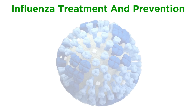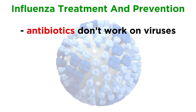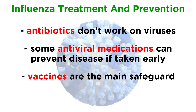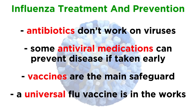Now let's talk about treatment and prevention. Since influenza is a virus, antibiotics don't work to treat infection. Some antiviral medications can prevent disease if taken early, but the main form of prevention is by vaccine. Since these viruses are prone to continual evolution, it is very difficult to create a vaccine that offers lifelong immunity. Because of antigenic drift, a slightly new strain of influenza is always emerging, and it typically takes between 6 and 9 months to manufacture large quantities of a vaccine once a new strain emerges. However, scientists are working to develop a universal flu vaccine that could revolutionize influenza prevention and neutralize a major killer worldwide.